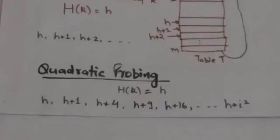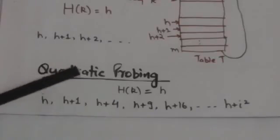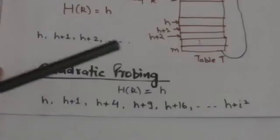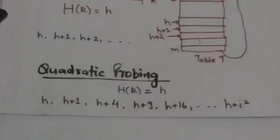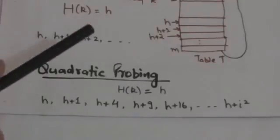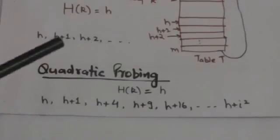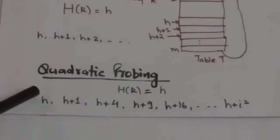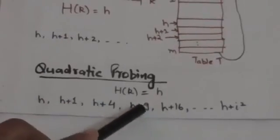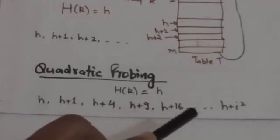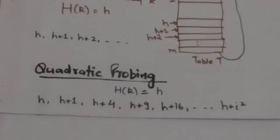Another method for resolving collision is quadratic probing. In quadratic probing, to add a record with key K having hash value H, instead of searching locations with addresses H, H+1, H+2, and so on, we search locations with addresses H, H+1, H+4, H+9, H+16, and so on — up to H plus i-squared — and so on.